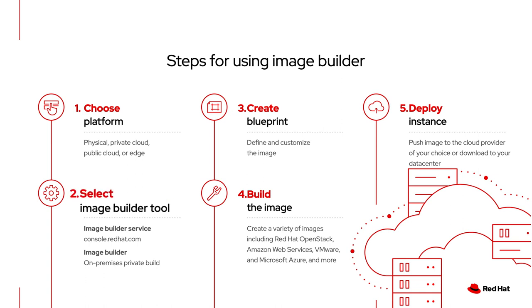Second, from there, you need to decide if the hosted service will meet your needs, or if it makes more sense to build the image in your on-premise data center. Thirdly, create your image — this involves designing your file system layouts and adding packages. Fourth, build the image. This is where Image Builder adds the extra little bits that optimize your workloads for AWS or configure the image for deployment on OpenStack.